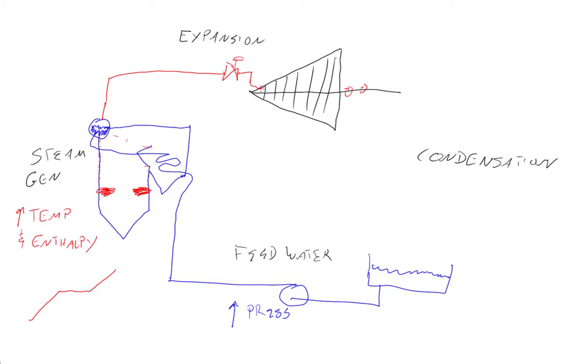So as the steam goes across all these turbine blades and expands, it eventually has to go somewhere or else it would just all equalize pressure, right? So it gets dumped back to the condenser.